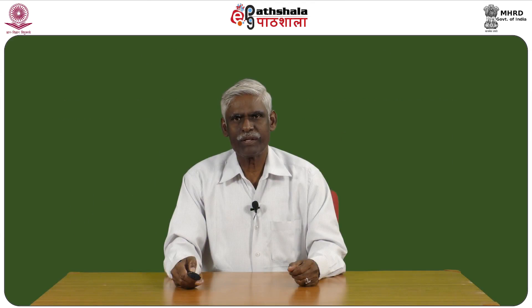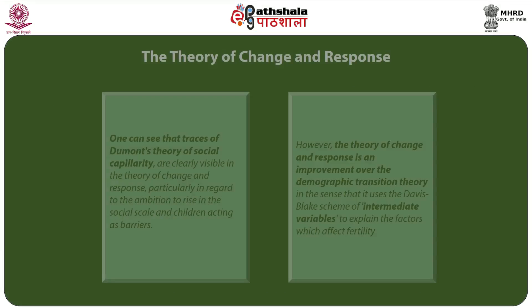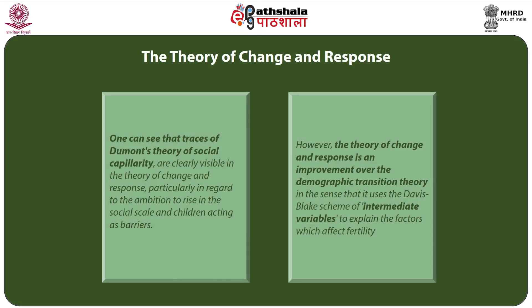As the economic revolution progressed, it was not difficult for rural people to migrate to cities to overcome rapid population growth. Kingsley Davis justified the universality of his theory by applying it to Ireland, a demographically unique country, and to Japan, a country which experienced population growth increase much later than North West Europe. Traces of Dumont's theory of social capillarity are clearly visible in the theory of change and response, particularly regarding the ambition to rise in the social scale and children acting as barriers.